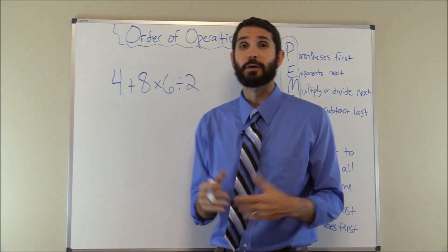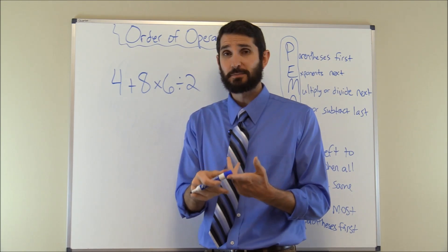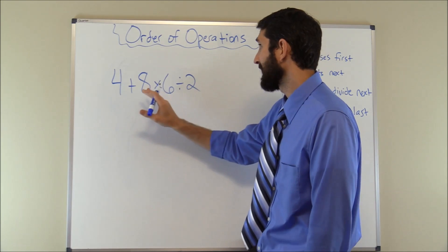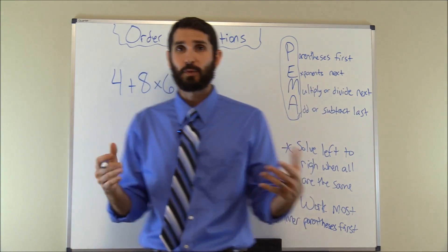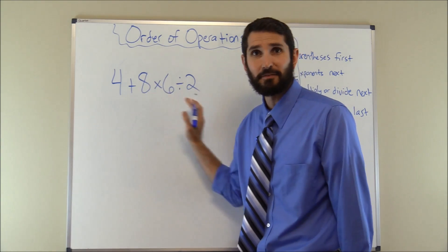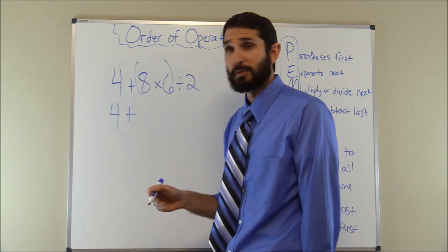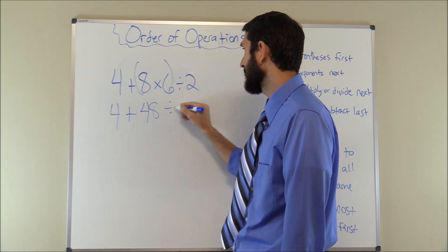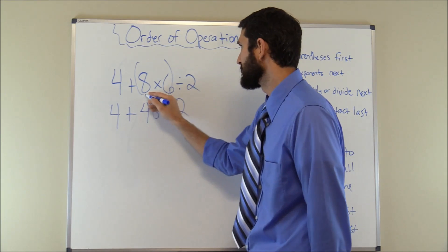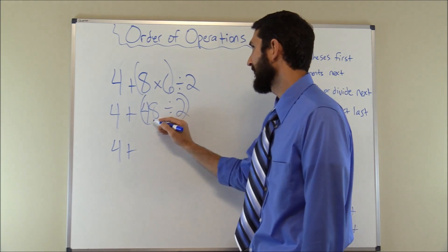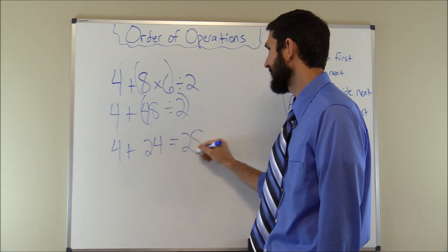For our next problem we have 4 + 8 × 6 ÷ 2. Following PIMA — parentheses, exponents, multiplication and division, then addition and subtraction — we first see 8 × 6 and 6 ÷ 2. Multiplication and division are on the same level, so we go left to right: 8 × 6 = 48. Our problem becomes 4 + 48 ÷ 2. Division comes before addition, so we do 48 ÷ 2 = 24 first, giving us 4 + 24 = 28.